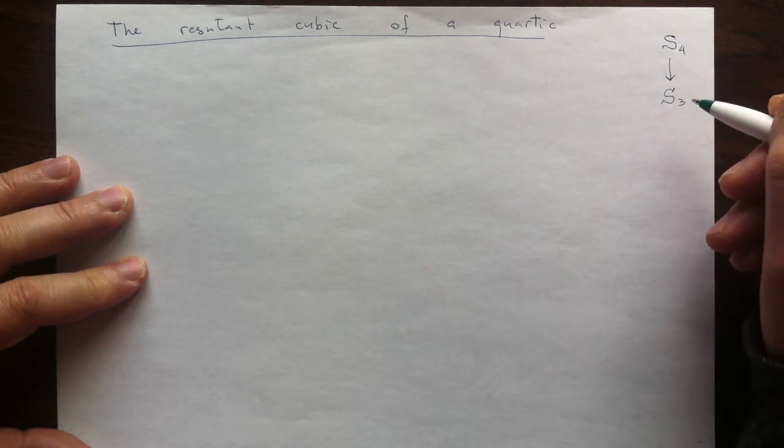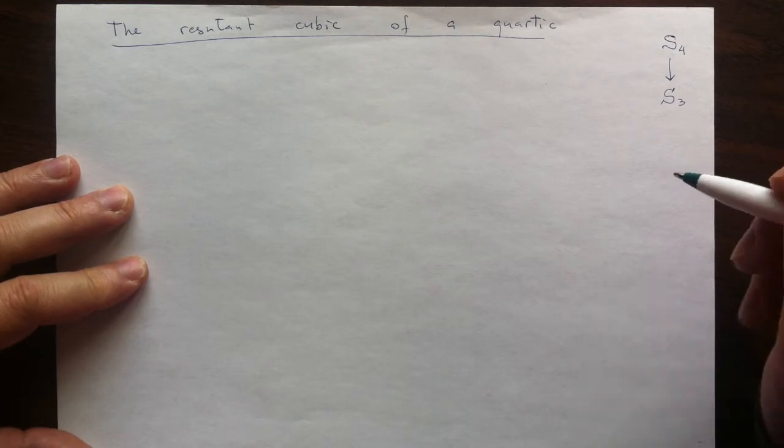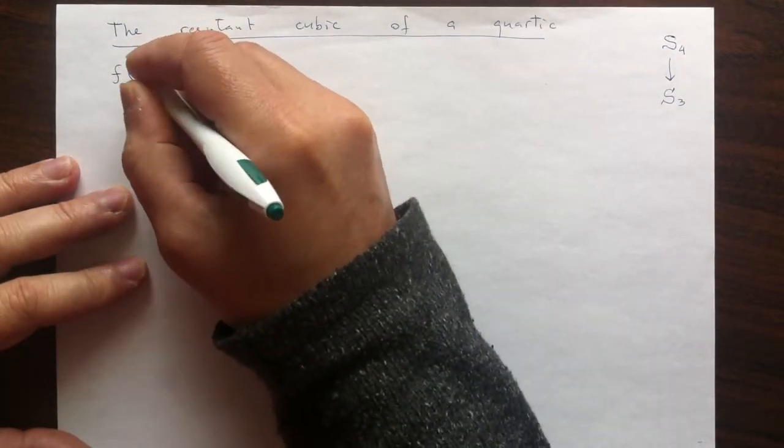If we have 4 elements, there are exactly 3 ways we can separate these 4 elements in pairs. And that is really the key for the construction.